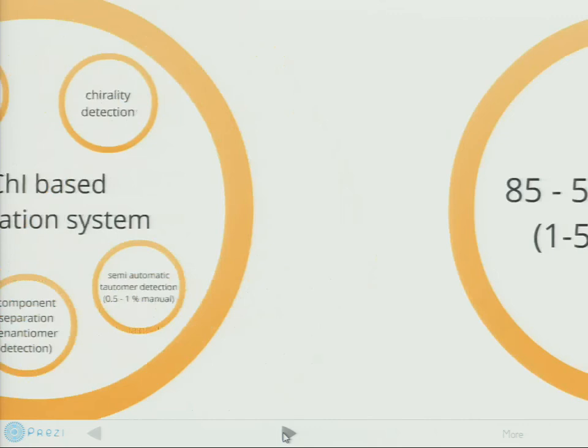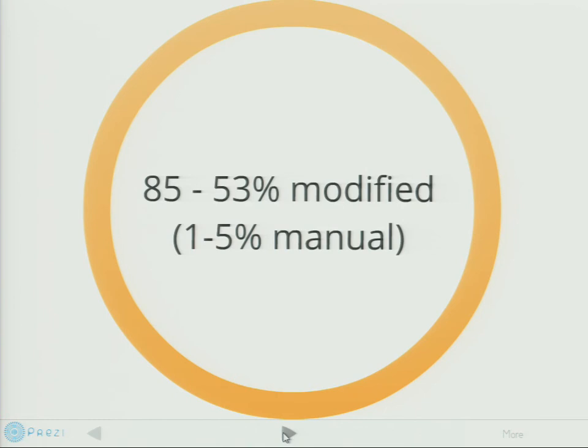After eight months and 3,000 lines of Python code later, we have built up a database which is constantly growing. Two million molecules per day are going through the system. The first finding is that almost all of them need to be modified in some way, mostly because of the stereochemical representation, but only one to five percent need to be manually curated — which I think is a manageable amount of data.